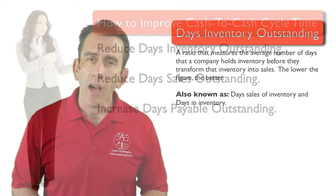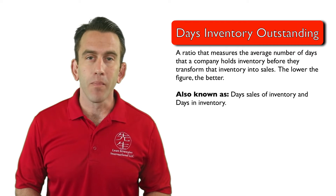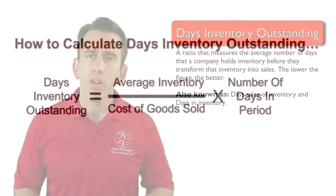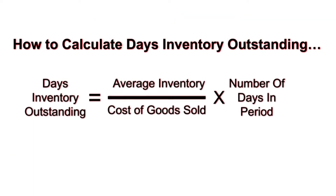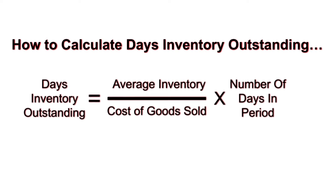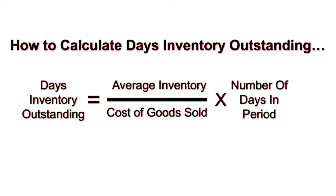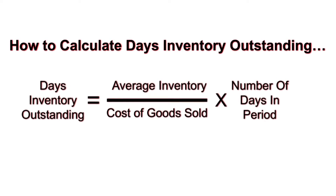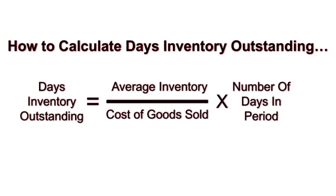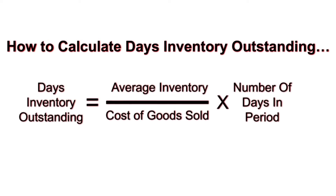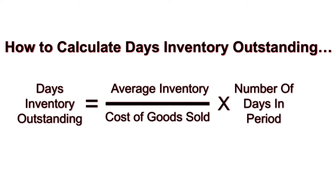So, how do we calculate Days Inventory Outstanding? It is usually calculated as shown in the picture here. D.I.O. equals Average Inventory divided by Cost of Goods Sold, times the number of days in the period you are calculating.